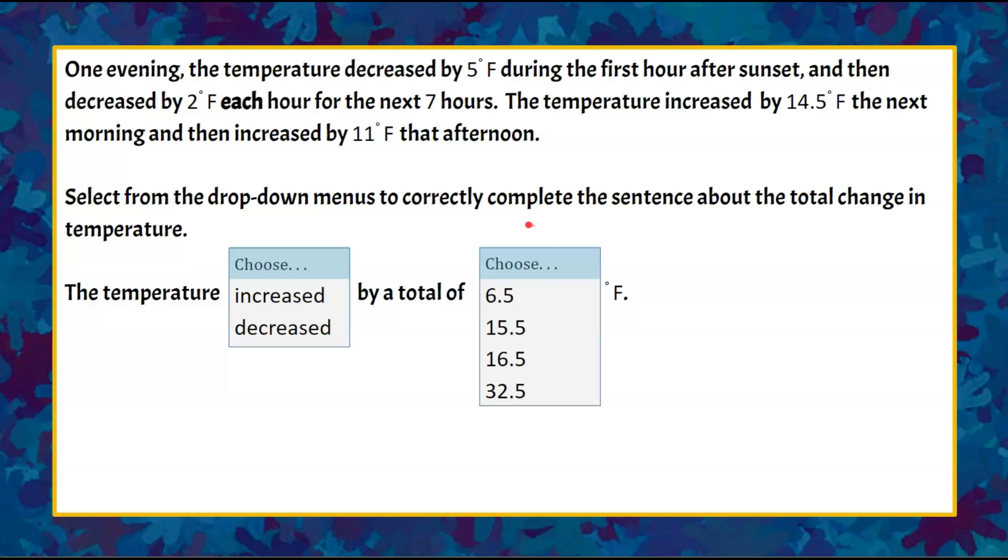Welcome back. Let's review everything that's been provided to us in the problem. It began by decreasing 5 degrees in the first hour. Then it decreased 2 degrees each hour for seven hours. Then it increased 14.5 degrees and increased again by 11 degrees. We're going to put these all together.